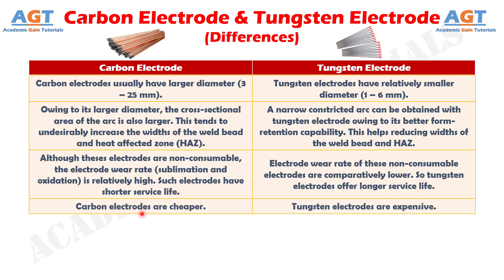No. 10: Carbon electrodes are cheaper, whereas tungsten electrodes are expensive.